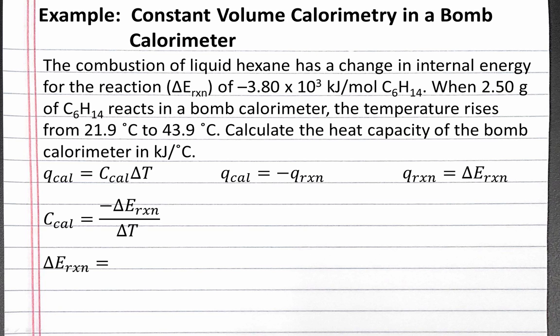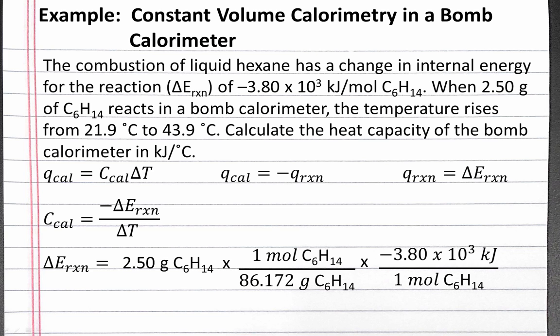To calculate our change in internal energy for the reaction, we have to take into account that we use 2.5 grams of hexane. The delta E reaction we're given in the problem is in units of kilojoules per mole of hexane. Since we did not use one entire mole, we have to determine what the change in internal energy is for the 2.5 grams of hexane that we did use in our reaction. So we'll use dimensional analysis to convert 2.5 grams of hexane into moles of hexane using the molar mass, and then from moles of hexane into kilojoules using the change in internal energy in kilojoules per mole of hexane. So based on our 2.5 grams of hexane, we should have released 110 kilojoules of energy. The negative sign indicates that the energy is released to the surroundings from the reaction.